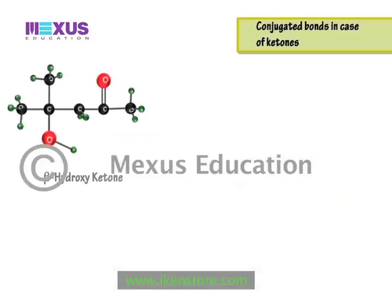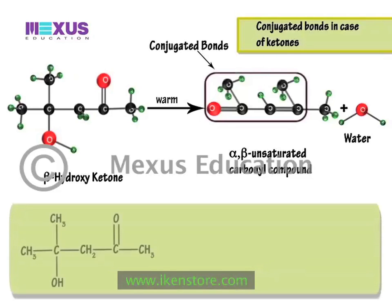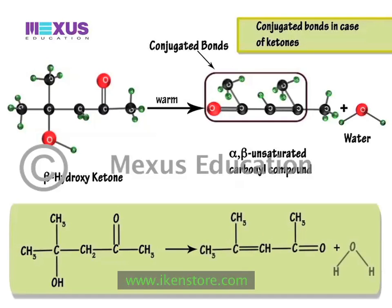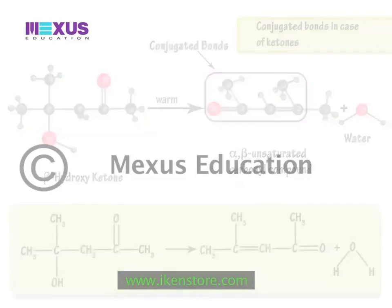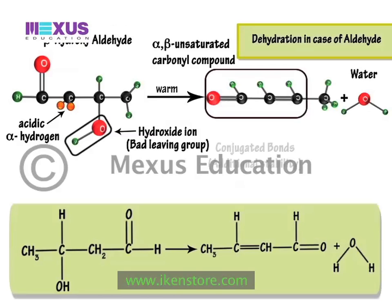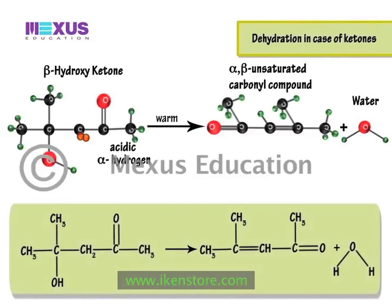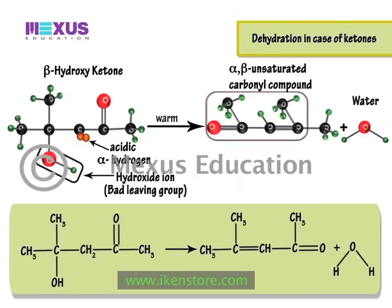The following illustrates the aldol condensation of a beta-hydroxy ketone. As in the case of aldehydes, the alpha-beta unsaturated carbonyl compound is a conjugated system and is readily formed on warming. Dehydration occurs readily because of the acidity of the remaining alpha hydrogen, and because the product has a conjugated system of double bonds which gives additional stability — even though the leaving group is a hydroxide ion, generally a poor leaving group.